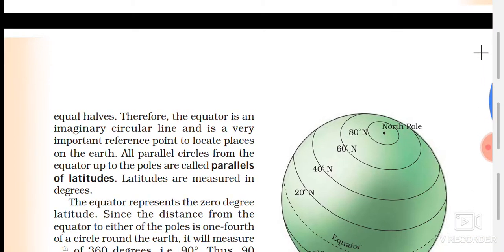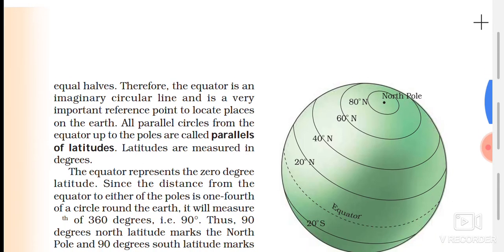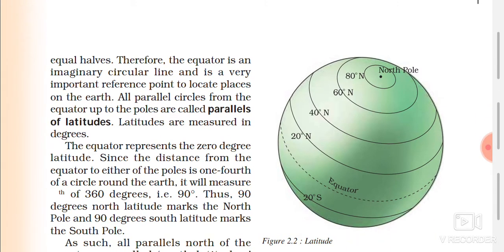Both hemispheres are equal halves. Therefore, the equator is an imaginary circular line and is a very important reference point to locate places on the Earth. The dotted line shown is the equator.